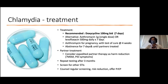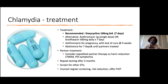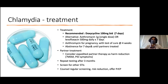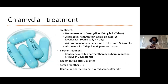Partner treatment is critical because reinfection leads to PID risk. Expedited partner therapy (EPT) is a harm-reduction method where treatment is sent home with the patient for a partner unlikely to present for care, along with information about treatment and follow-up. However, PID is underdiagnosed and undertreated, and partners could have complications. In MSM, there are also high rates of syphilis and HIV, making in-person evaluation important for testing and offering PrEP.